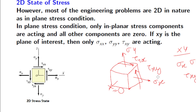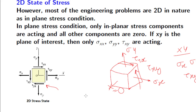In the xy plane you have sigma x, sigma y, and tau xy. Note that tau yx is the same as tau xy. This is known as the 2D state of stress. Most engineering problems are 2D in nature, so we will focus mostly on this state. Please remember that even though a 2D diagram is drawn as a flat figure, it is actually a cubic element seen from the front view.